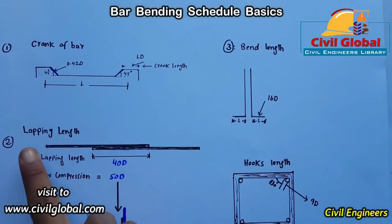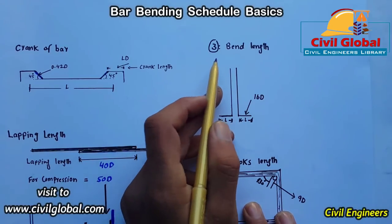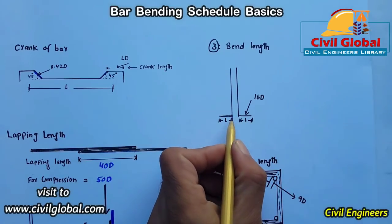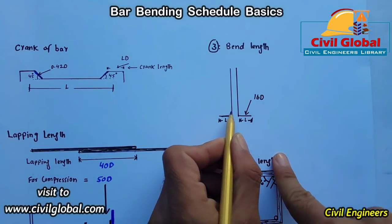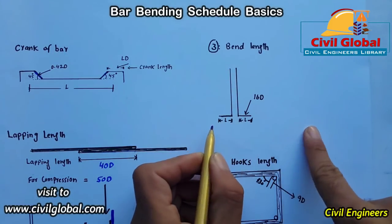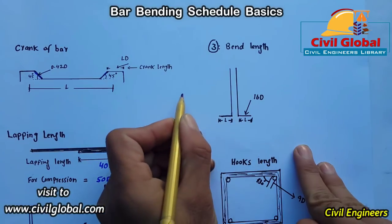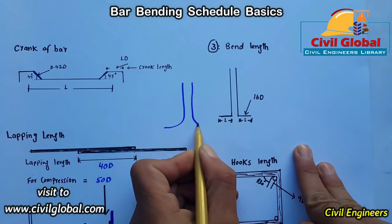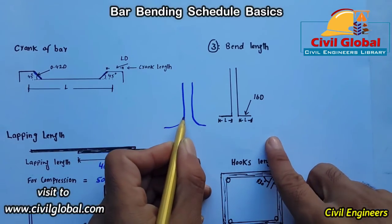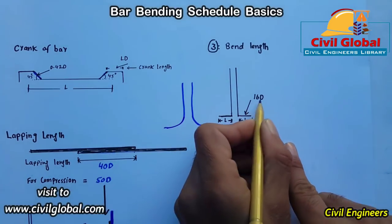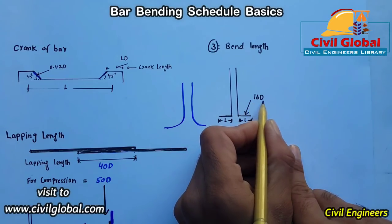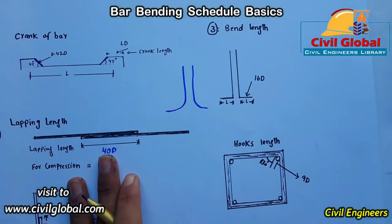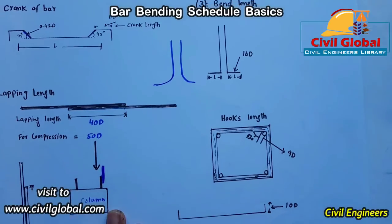The third point is bent length. At the base of the column — in the column footing — we provide a bend. The bent length formula is 16D, where 16 is a constant and D is the diameter of the steel used in the column. This is mostly used in column footing and it is also very important.